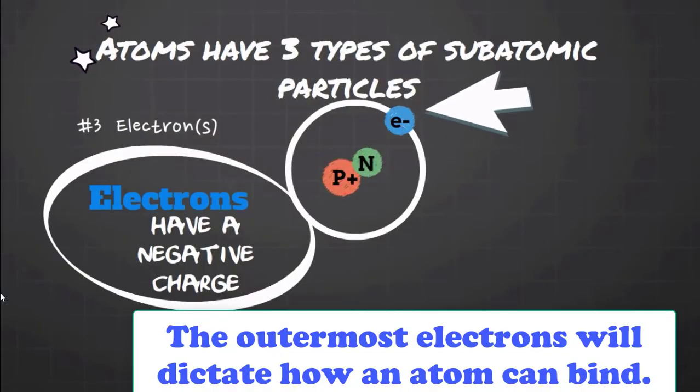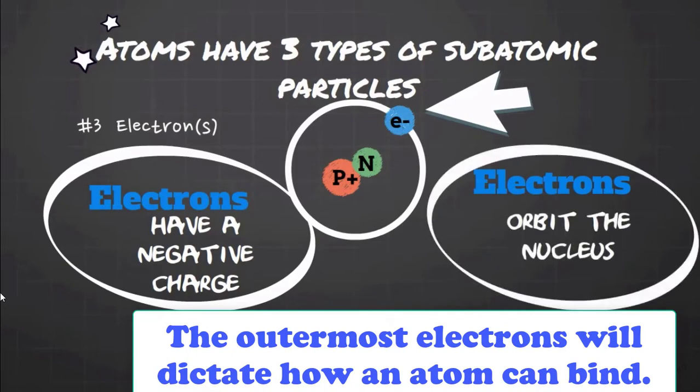The outermost electrons in an atom dictate how the atom can interact.